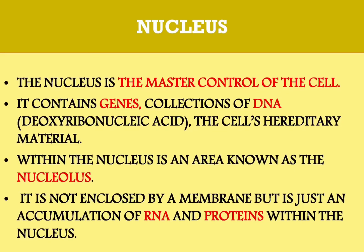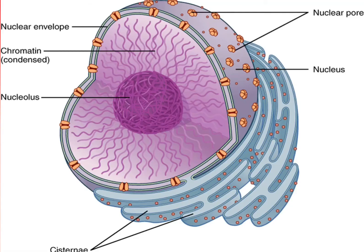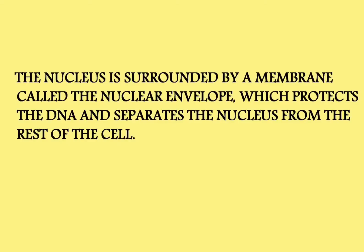The nucleus serves as the cell's command center, sending directions to the cell to grow, mature, divide, and die. It also contains DNA — deoxyribonucleic acid — the cell's hereditary material. Within the nucleus is an area known as the nucleolus. It is not enclosed by a membrane, but is just an accumulation of RNA and protein within the nucleus.